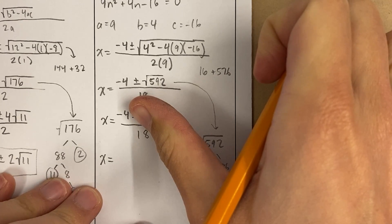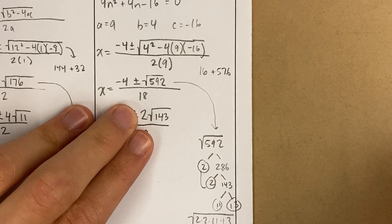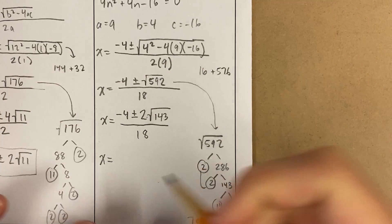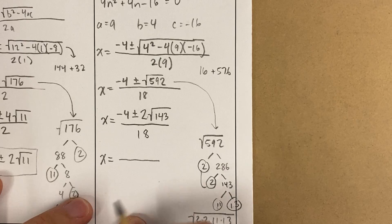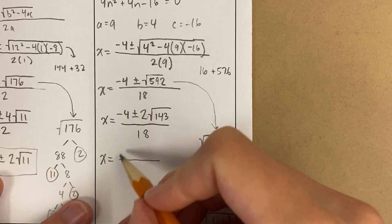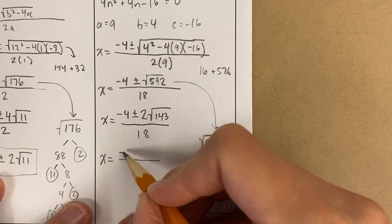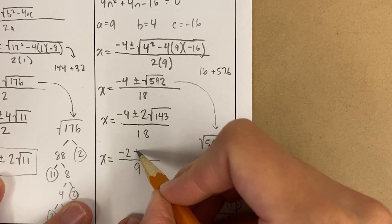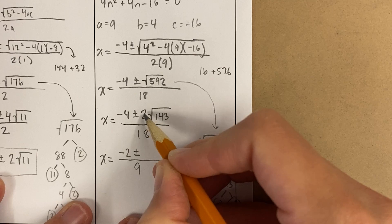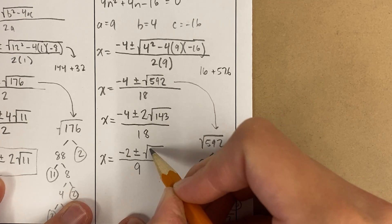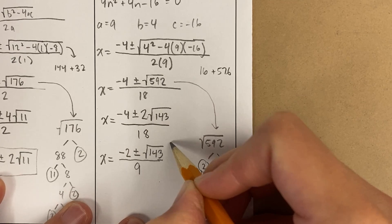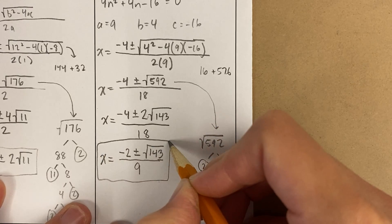they're both divisible by 2. And I say, okay, well, is this one divisible by 2 also? Oh, hey, it is. So what I'm going to do is I'm actually going to go through and just divide by 2 in everything. So I'm dividing the bottom by 2. I get 9. I'm dividing this by 2. I get negative 2. I'm dividing this by 2. Right? 2 divided by 2 is just 1, and I just write it like this.